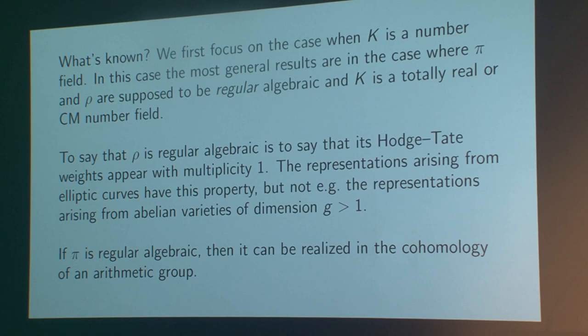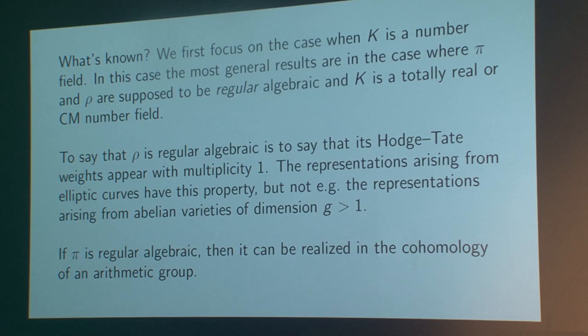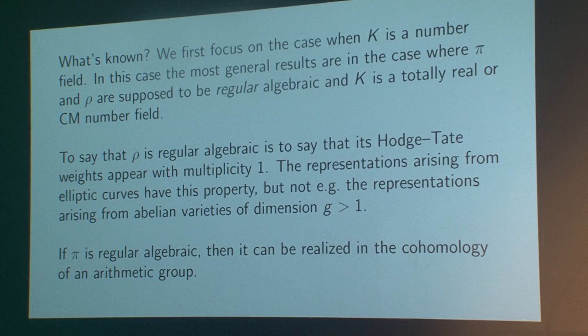What do we actually know about this reciprocity conjecture? I'll start with what we know in the number field case. We really have to restrict to a certain class of number fields to say anything non-trivial. That class is either totally real fields — all their embeddings in the complex numbers take values in the reals — or CM number fields, which are totally complex quadratic extensions of totally real fields. The most concrete examples are: for totally real, the rationals or a real quadratic field; for CM, an imaginary quadratic field. The second restriction is to not just algebraic but regular algebraic representations. On the Galois side, this means Galois representations without repeated Hodge–Tate weights, or equivalently, all Hodge numbers are either 0 or 1. Elliptic curves are allowed. But we wouldn't allow abelian varieties of dimension greater than 1, because the Tate module gives a Galois representation of dimension 2g with Hodge numbers of multiplicity g, which wouldn't be regular.